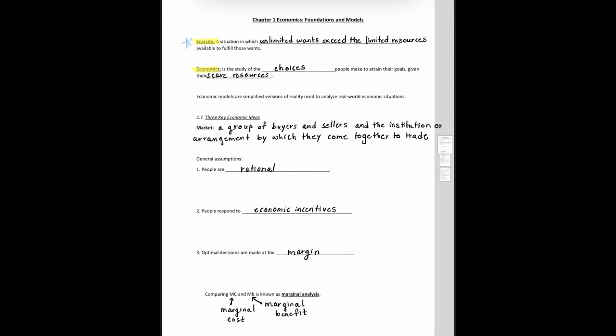In order to study choices given scarcity, economists use what are called economic models. Again, like I mentioned, we'll be introducing our first model in Chapter 2. But what models are essentially are simplified versions of reality used to analyze real-world situations. I want you to think about economic models.